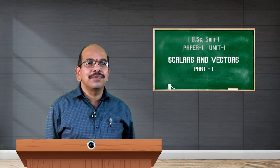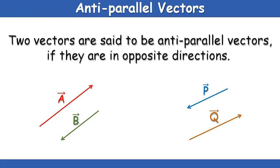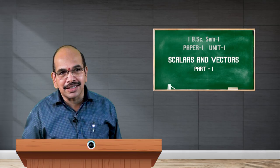Now let us see another type: anti-parallel vectors. Two vectors are said to be anti-parallel if they are in opposite directions. As it is very clear in the figure, vector A is in the upward direction and vector B is directed in the downward direction. Both are parallel, but they are anti-parallel vectors. In the same way, vector P and vector Q are anti-parallel vectors. Now let us talk about negative vectors. Two anti-parallel vectors are said to be negative if they have the same magnitude. If vector A is in the downward direction and vector B is in the upward direction, both having the same magnitude but different direction, then A equals minus B — we call this a negative vector. Similarly, vector P equals minus vector Q. This is how we define negative vectors in vector analysis.